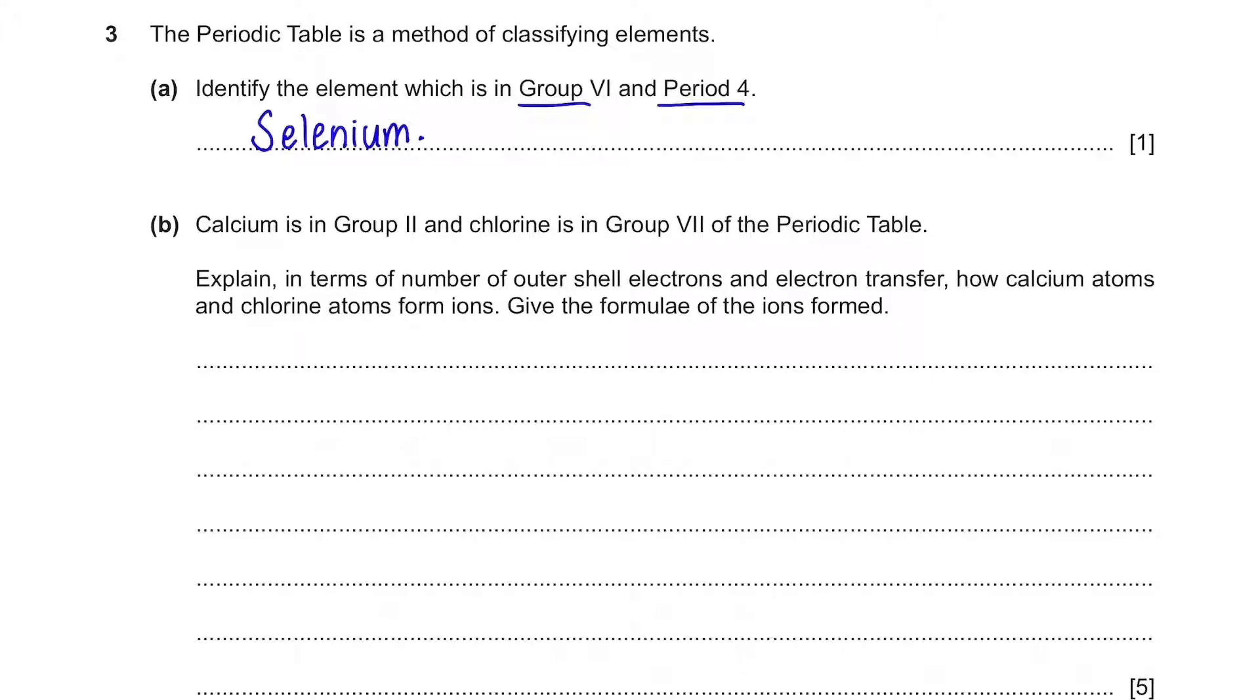Next, part B. Calcium is in group 2 and chlorine is in group 7 of the periodic table. Explain in terms of number of outer shell electrons and electron transfer how calcium atoms and chlorine atoms form ions. Give the formulae of the ions formed. So since calcium is in group 2, we can say that calcium has two outer electrons.